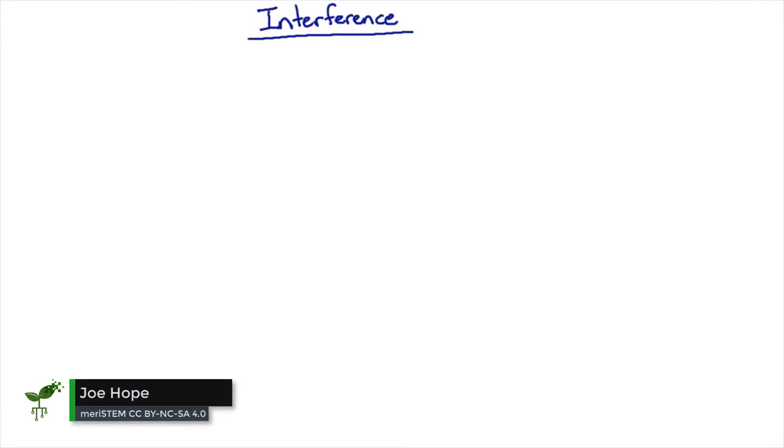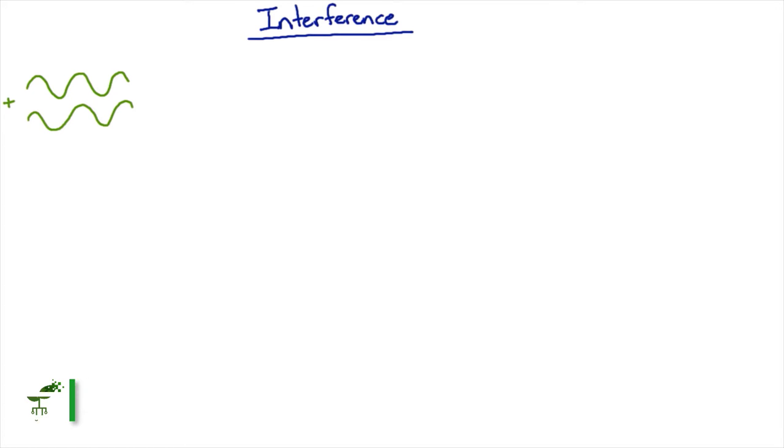Remember, you get interference when waves add up. If waves add up in phase like this, then you get a big wave - that's constructive interference. And if they add up out of phase like this, then you get nothing - that's destructive interference.